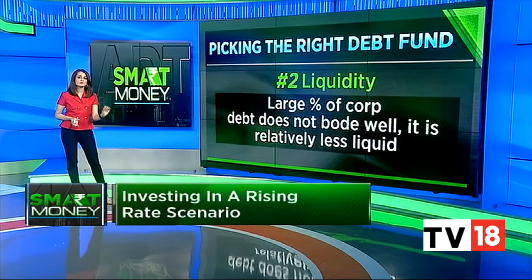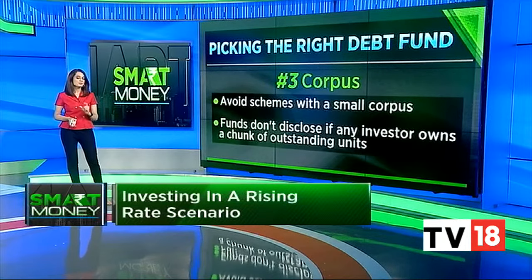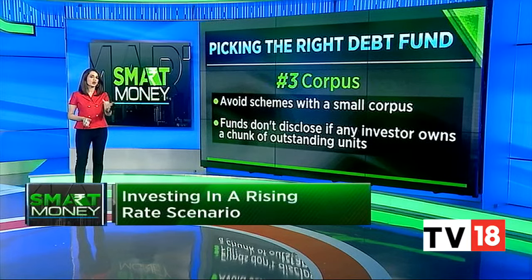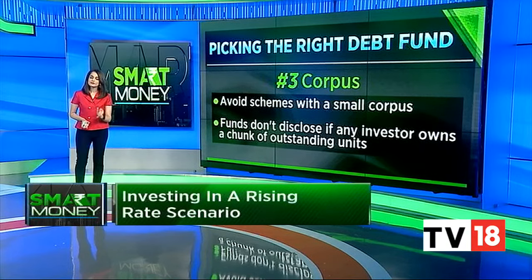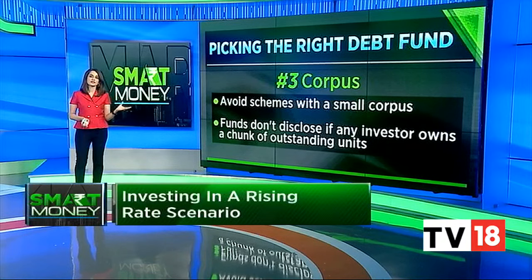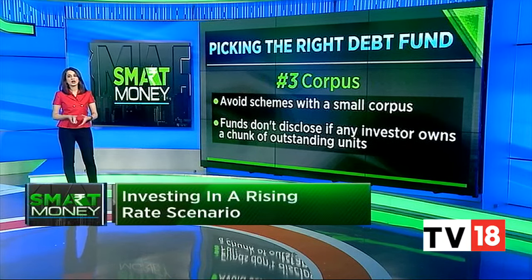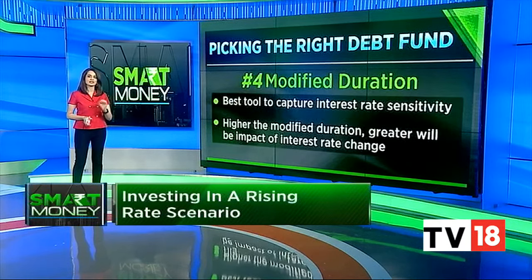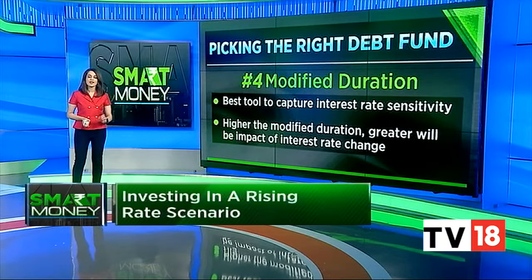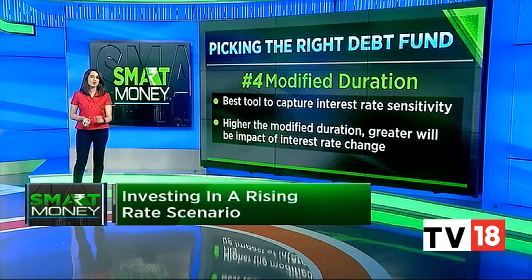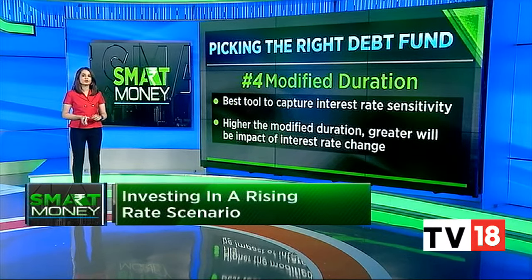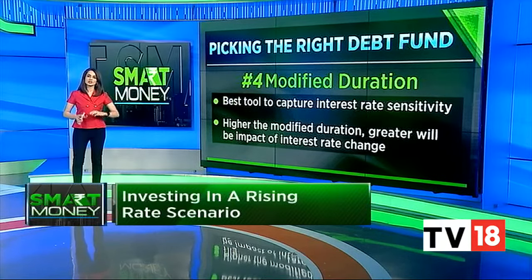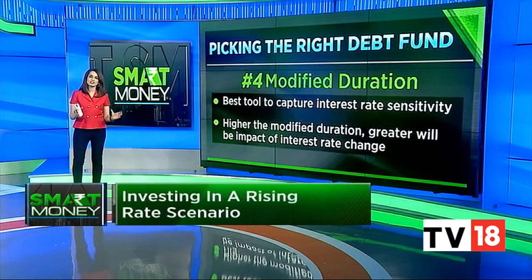The third thing to do is avoid schemes with small corpuses. That's because funds do not disclose if there are investors who own a substantial chunk of outstanding units. If such investors decide to redeem their holdings, the fund could be forced to sell its holdings below the market rate. Fourth, the best tool to capture the interest rate sensitivity of a debt fund is modified duration. It tells you how much the price of a bond would move if interest rates move up or down by 1%. The higher the modified duration, the greater will be the impact of an interest rate change.